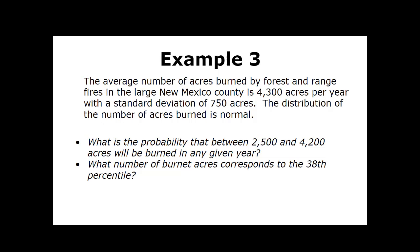We're going to continue with examples three and four, and then work with raw data all the way through to answering questions with technology. Example three: the average number of acres burned by forest and range fires in a large New Mexico county is 4,300 acres per year with a standard deviation of 750 acres. The distribution is normal. What is the probability that between 2,500 and 4,200 acres will be burned in any given year?